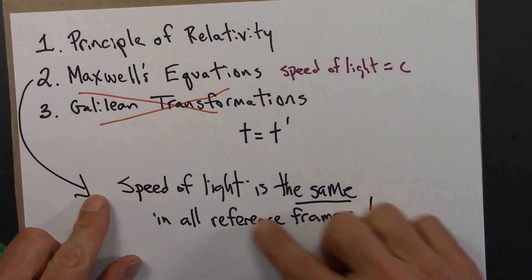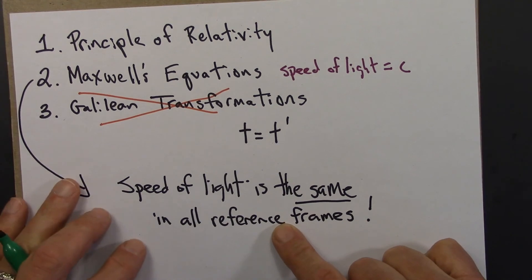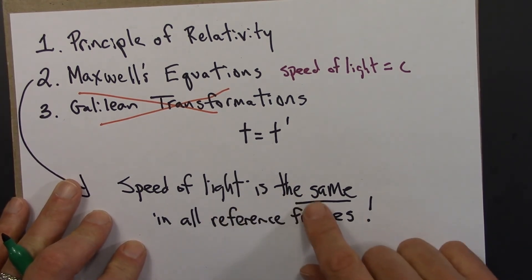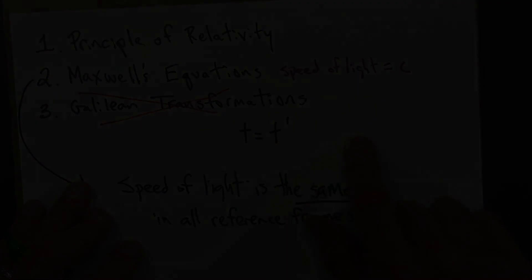All right. So this is the statement, the axiom, the assumption of Einstein that we'll actually spend the rest of the course unpacking. If the speed of light is the same in all reference frames, what does that mean for physics? What does that mean for time? What does that mean for length? So we'll start exploring that in the next video when we think about how to synchronize clocks.